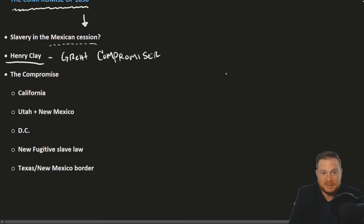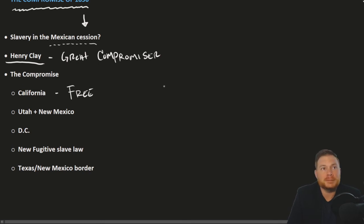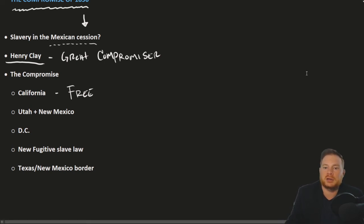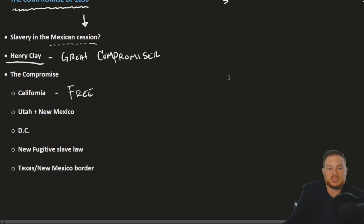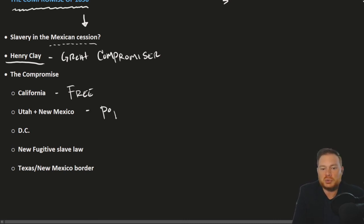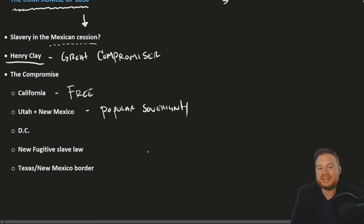The Compromise of 1850 has five different parts. The first part is that California will enter as a free state — for the most part, this was a given, as it was very unlikely Southerners could convince Congress to make California a slave state since the people of California had already created a free constitution and there were practically no slaves there. Other territories — Utah and New Mexico — which were still sparsely populated but might one day enter the Union, would be decided by popular sovereignty: when the time came, the people would vote on whether slavery would be legal or illegal.